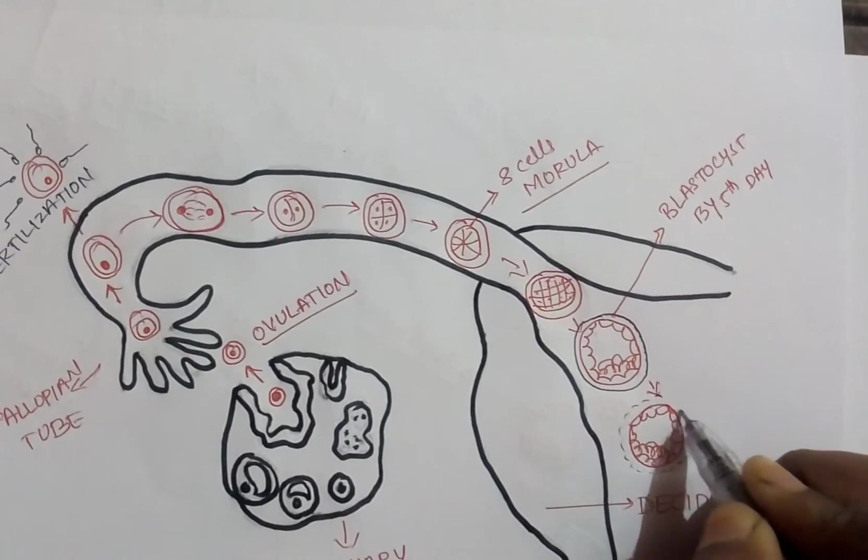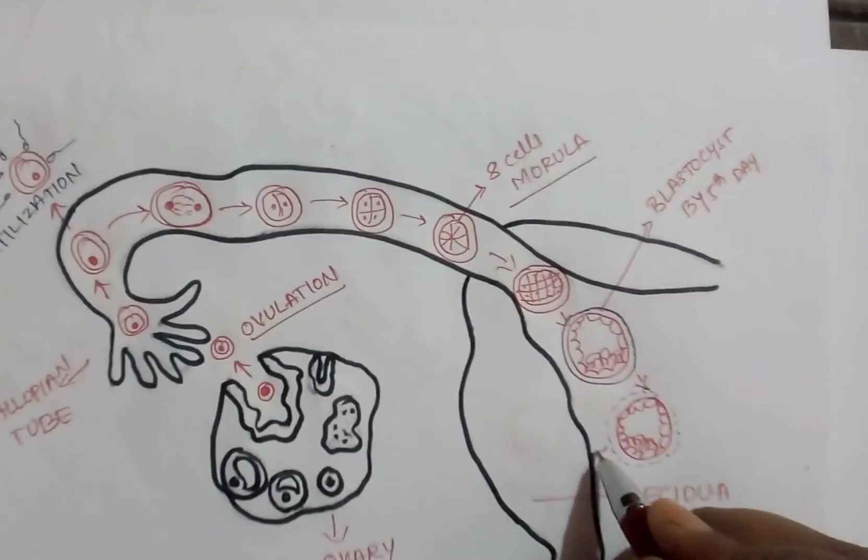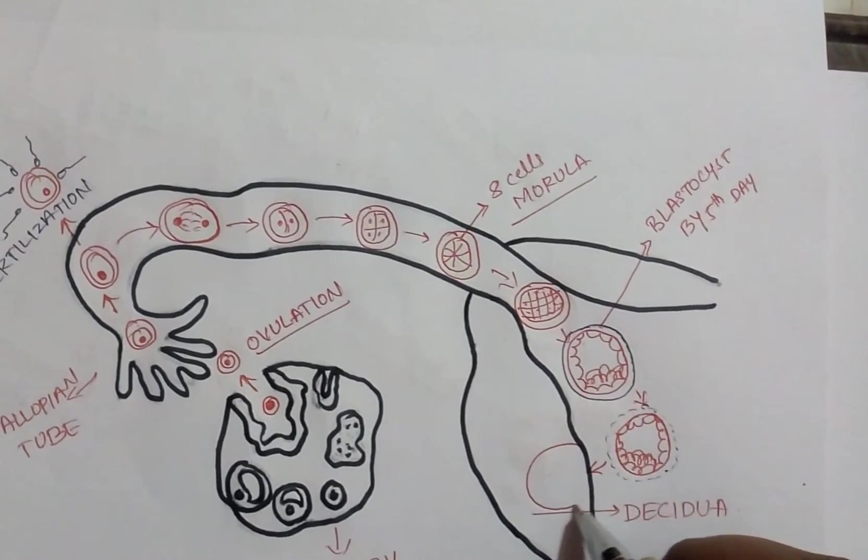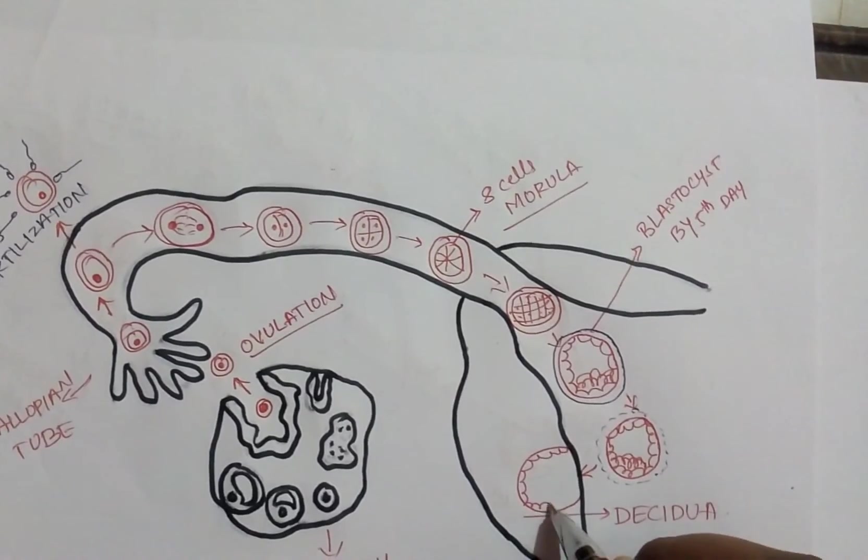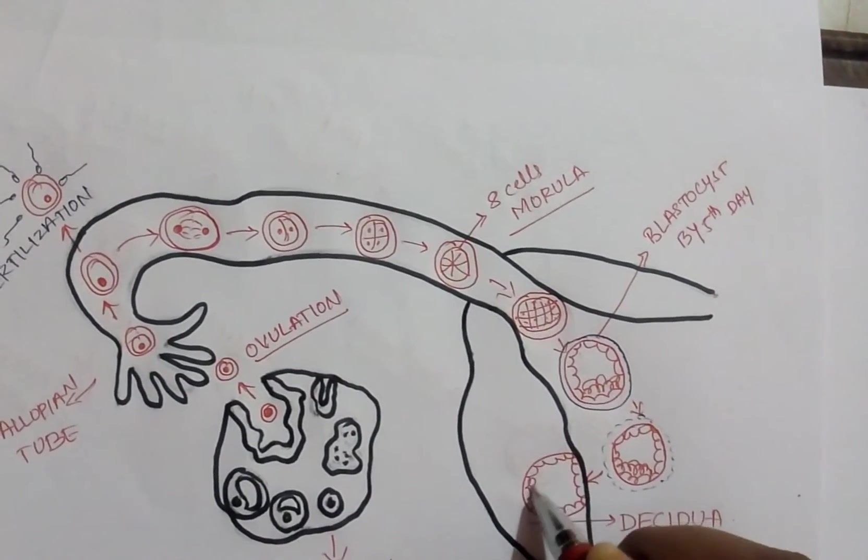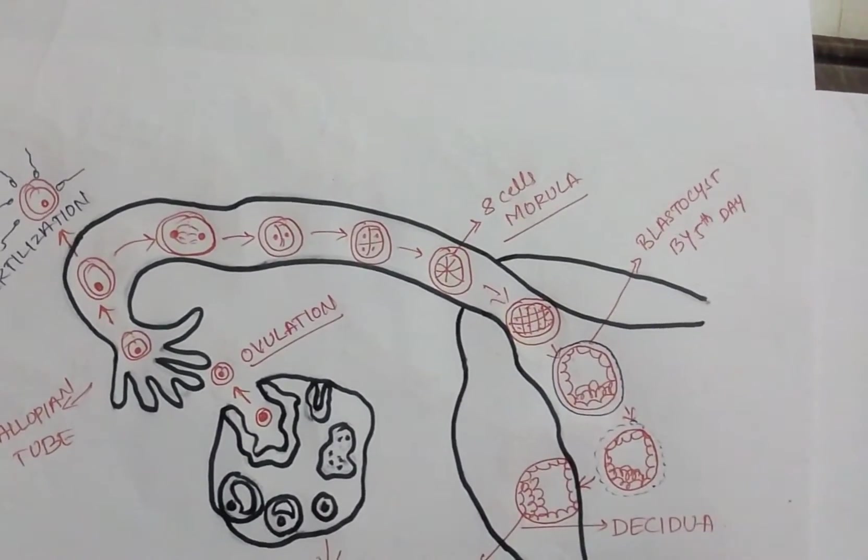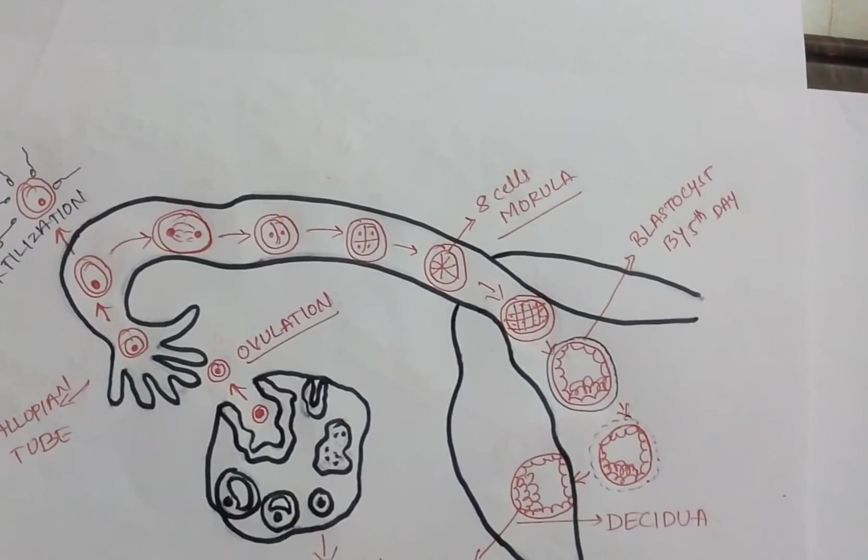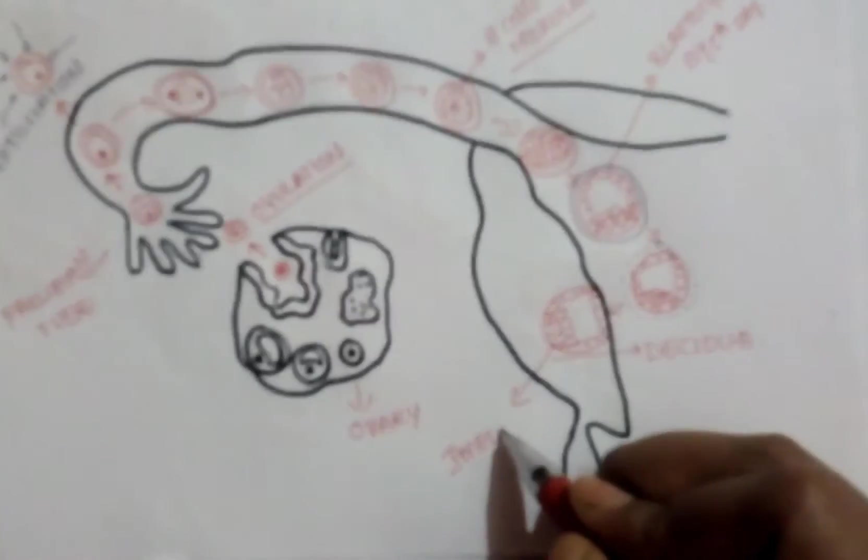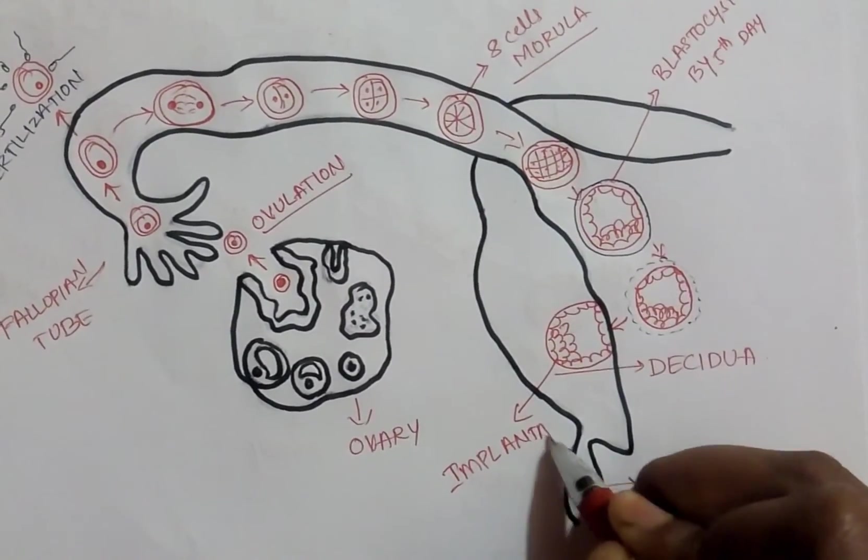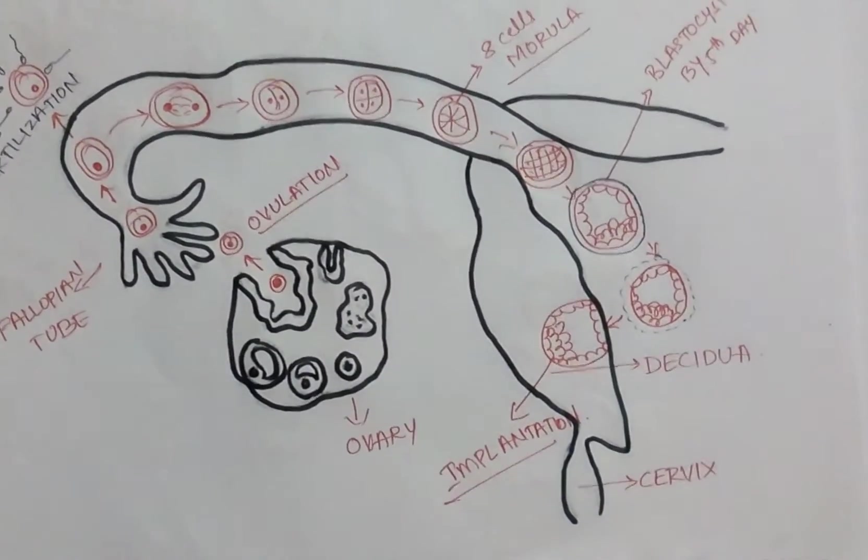This zona pellucida is very important to avoid the implantation. When this zona pellucida gets detached, the blastocyst will attach to the endometrium, which is called implantation. When the zona pellucida disappears, the blastocyst will get attached to the endometrium.